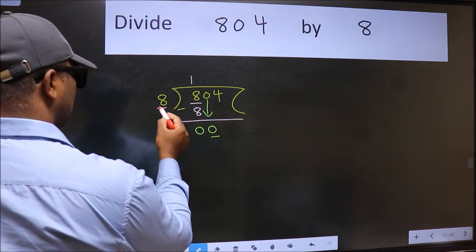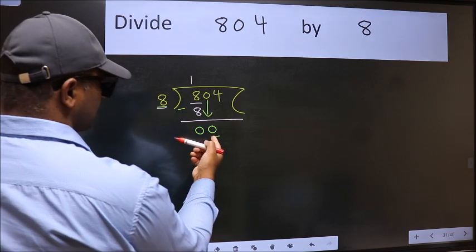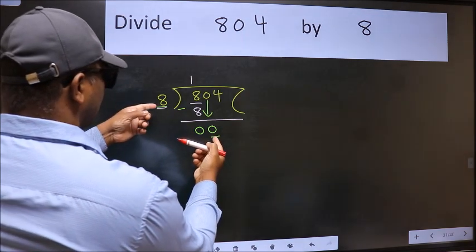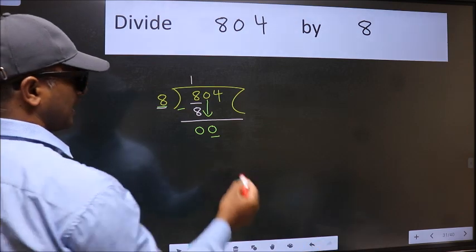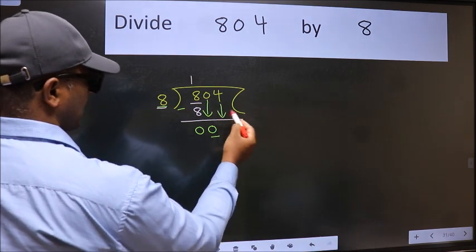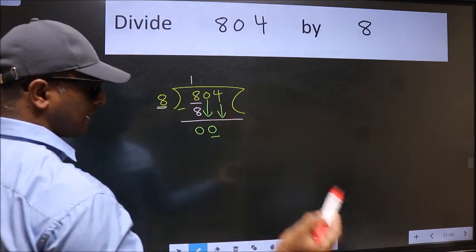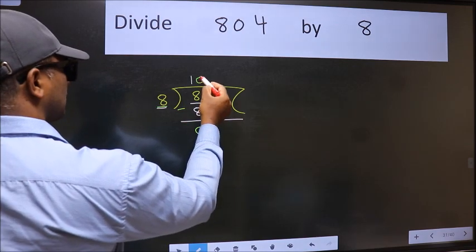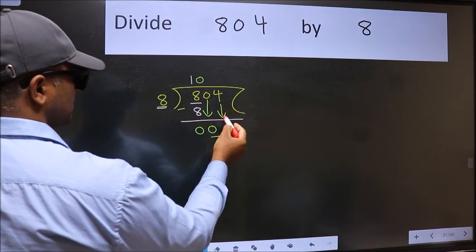Now here we have 0 and here 8. 0 is smaller than 8, so we should bring down the second number. The rule to bring down the second number is put 0 here. Then only can we bring this number down.